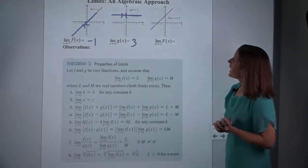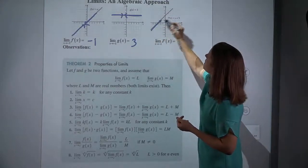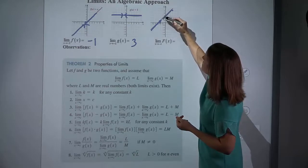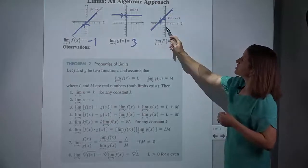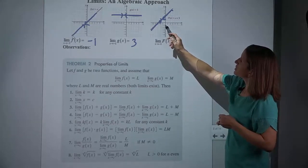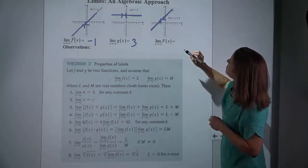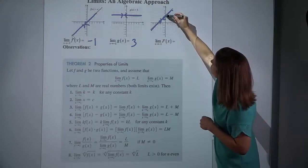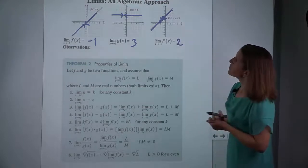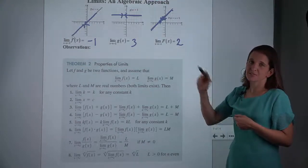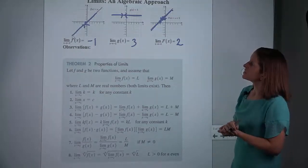And then this last function — one more practice, we're still approaching negative 1. As I trace from the left and from the right, what y value are we approaching? As x gets closer and closer to negative 1 from both sides, it turns out that our y is approaching 2. That's just practicing doing things graphically, just tracing and checking it out.